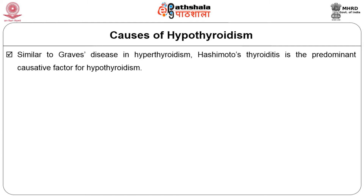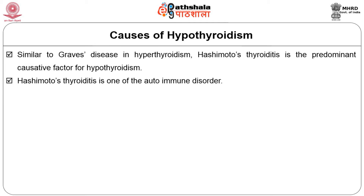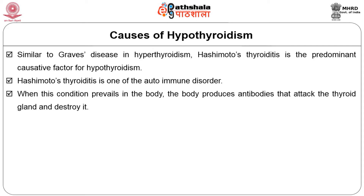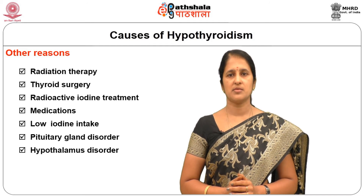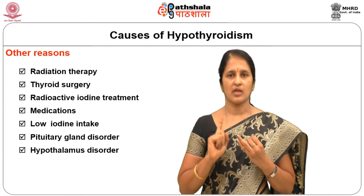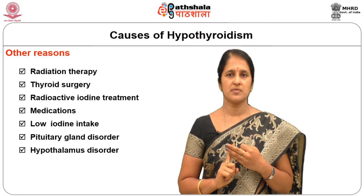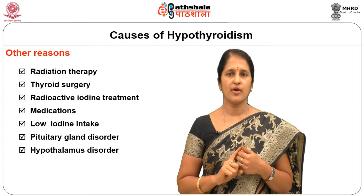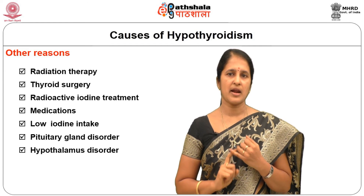Similar to Graves disease in hyperthyroidism, Hashimoto's thyroiditis is the predominant causative factor for hypothyroidism. This is an autoimmune disorder where the body produces antibodies that attack and destroy the thyroid gland. Viral infection is also a reason for thyroiditis. Other reasons for hypothyroidism include radiation therapy, thyroid surgery, radioactive iodine treatment, medications, low iodine intake, pituitary gland disorder, and hypothalamus disorder.